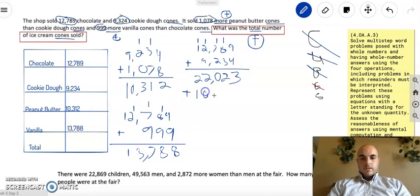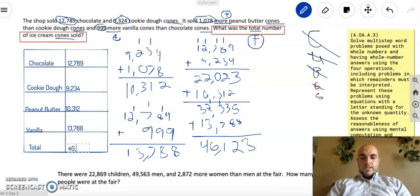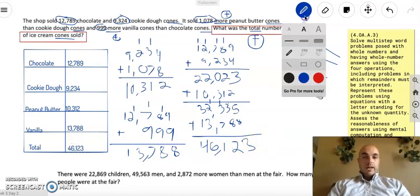Which is 10,312. 3 plus 2 is 5. 2 plus 1 is 3. 0 plus 3 is 3. 2 plus 0 is 2. 2 plus 1 is 3. OK. Last but certainly not least, let's add my vanilla. 13,788. 5 plus 8 is 13, carry the 1. 1 plus 3 is 4, plus 8 is 12. Carry the 1. 1 plus 3 is 4, plus 7 is 11. 1 plus 2 is 3, plus 3 is 6. 3 plus 1 is 4. Our total is 46,123 cones. Holy cow. That is a lot of ice cream.